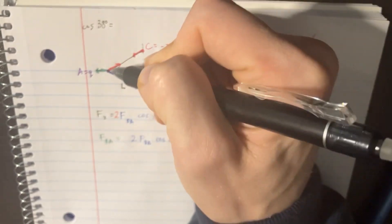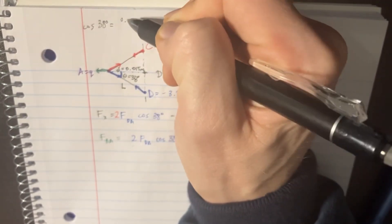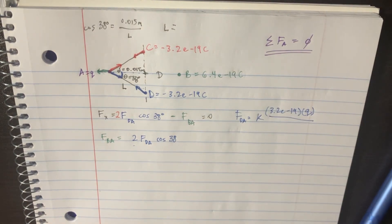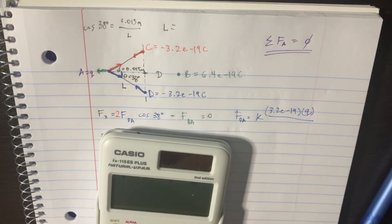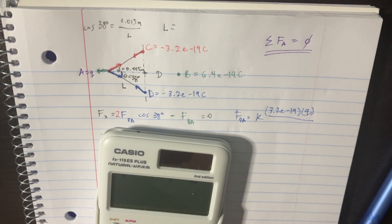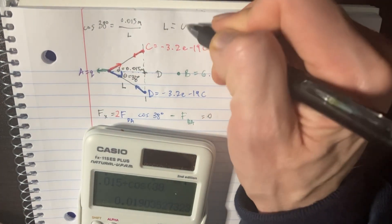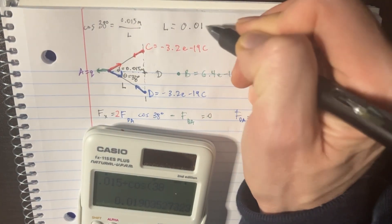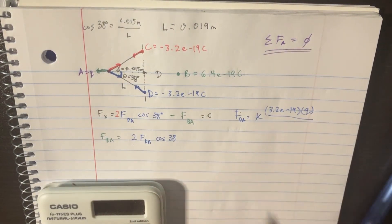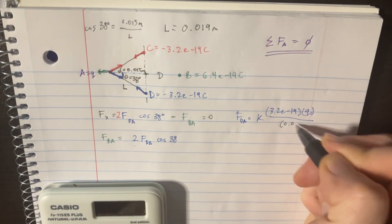We can say that the cosine of 38 degrees is going to be equal to adjacent, which is D, which is 0.015 meters, divided by L, which is the hypotenuse. Shift that to the other side, do a little manipulation. We should find that 0.015 divided by cosine 38 is going to be equal to 0.019. That's the length of L. So that's what's going to go over here. 0.019 squared.